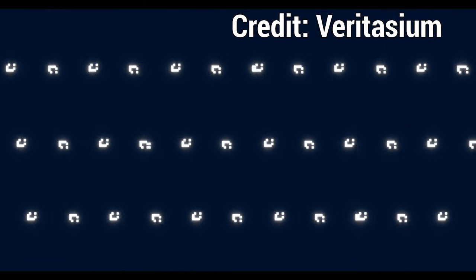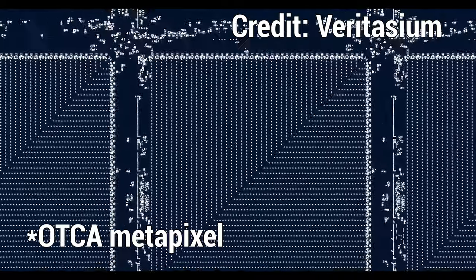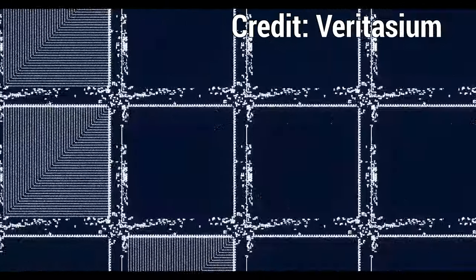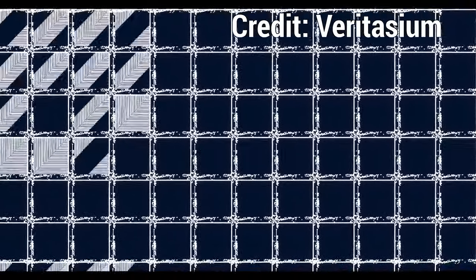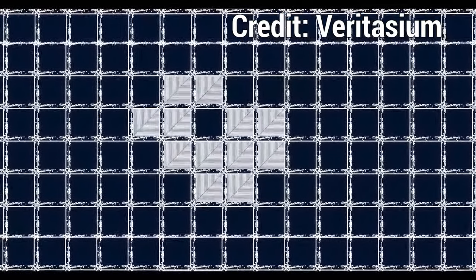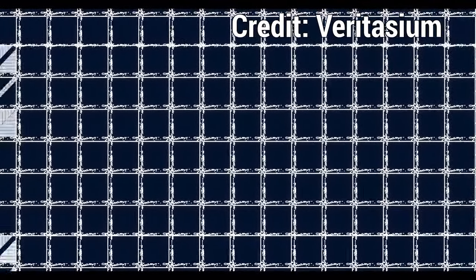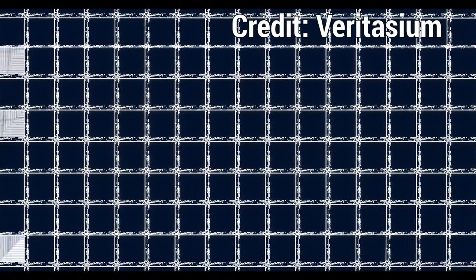The thing that really blew my mind that I learned from this Veritasium video is that you can actually play Conway's Game of Life inside Conway's Game of Life. Someone actually created this thing known as an Octa Metapixel, which is a 2048 by 2048 grid-sized version of a single cell in Conway's Game of Life. You can basically use that as a single cell and combine it with many other Octa Metapixels to play Conway's Game of Life inside Conway's Game of Life. When I learned about this, my head just about exploded — I thought this was the coolest thing ever.